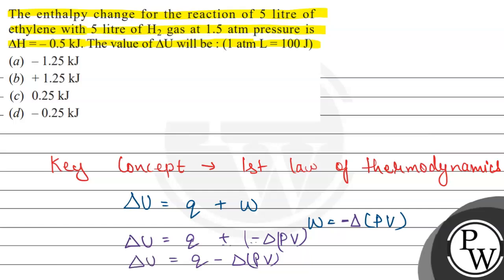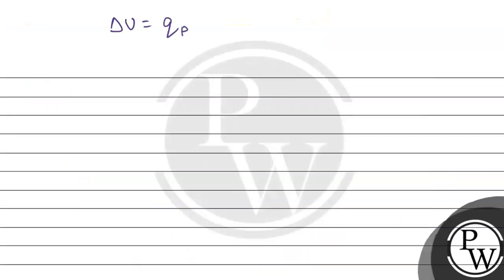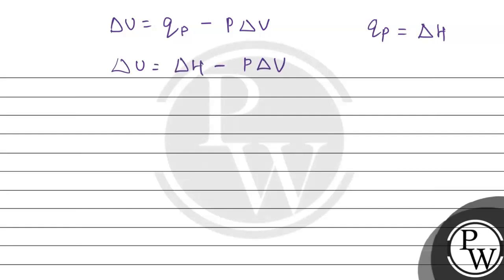Now we will take the pressure constant. At constant pressure, delta U will be equal to the heat at constant pressure minus P-constant times the change in volume. From this we can see that Q_P — heat at constant pressure — is equal to the change in enthalpy. So delta U equals delta H minus P delta V. This is the equation for the relationship between internal energy, change in enthalpy, pressure, and change in volume.